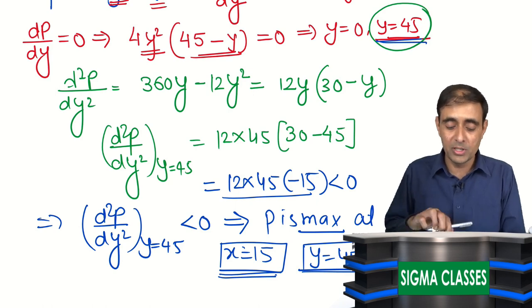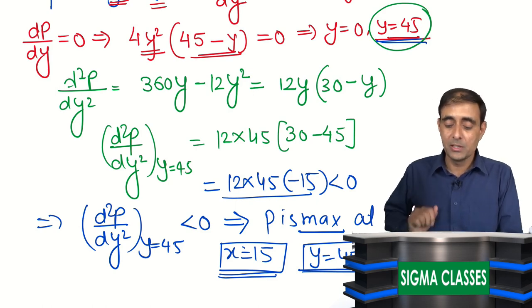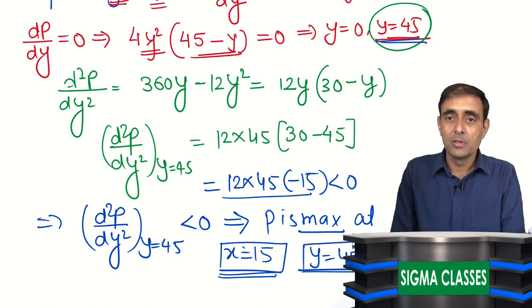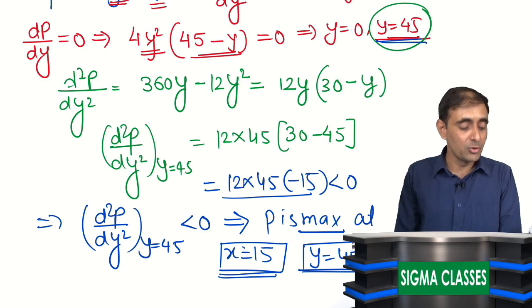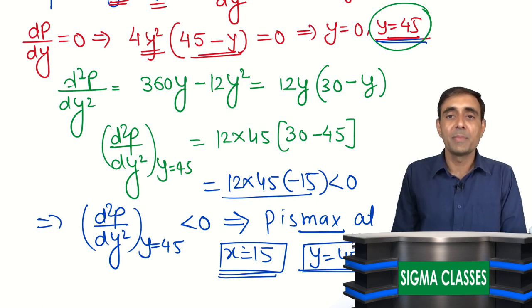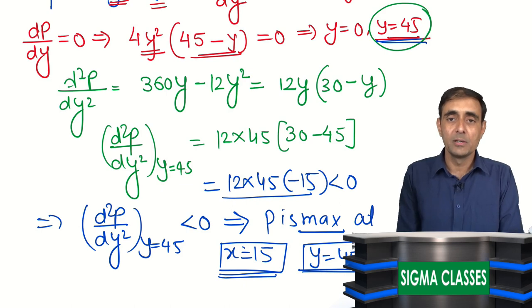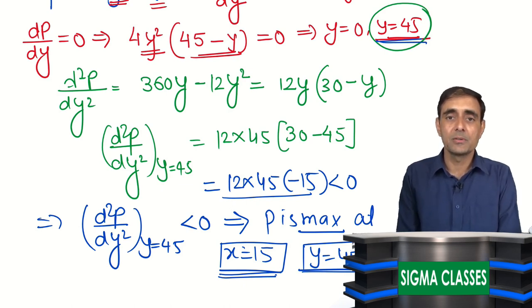If we choose these two numbers with sum 60, the given product x·y³ will be maximum. Next questions will be done in the next video. Till then, please practice these questions on your own. Bye.